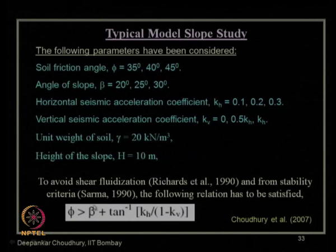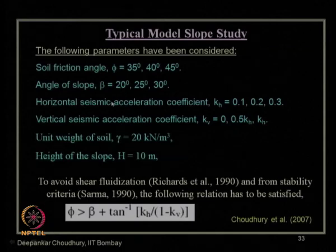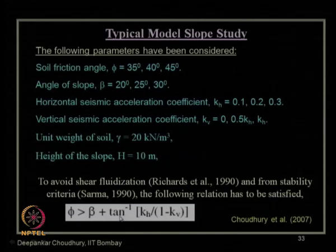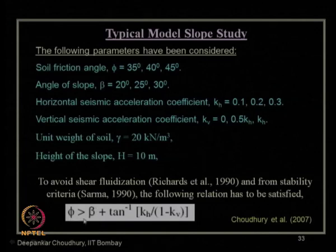The β term comes from the static stability criterion — for a cohesionless soil to have a stable finite slope, φ must be greater than the slope angle β. Sharma combined both effects. For the seismic stability criterion of a soil slope, φ must be greater than β plus tan⁻¹(KH / (1 − KV)).